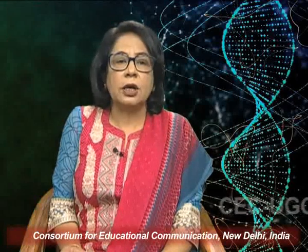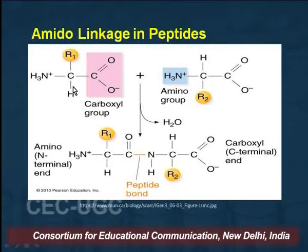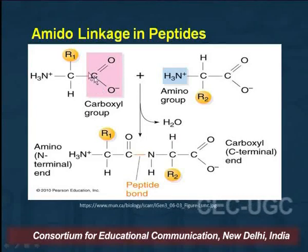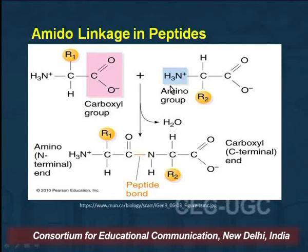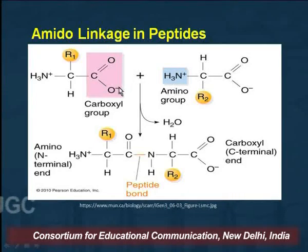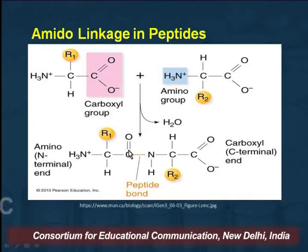This is the amide linkage. In the amide linkage: because amino acids occur as zwitterions due to the internal acid-base reaction, this carboxylic group will react with the amino group of the second amino acid. The OH group is removed from the carboxyl and H is removed from the amino group, resulting in the formation of an amide linkage — which we call a peptide bond.